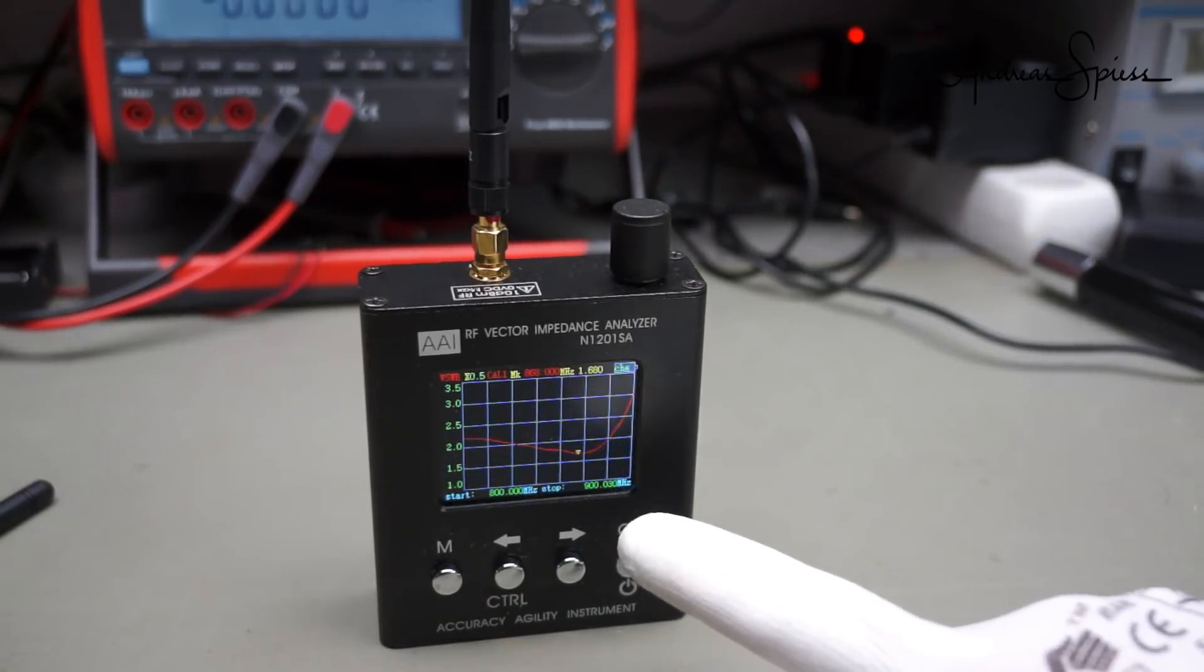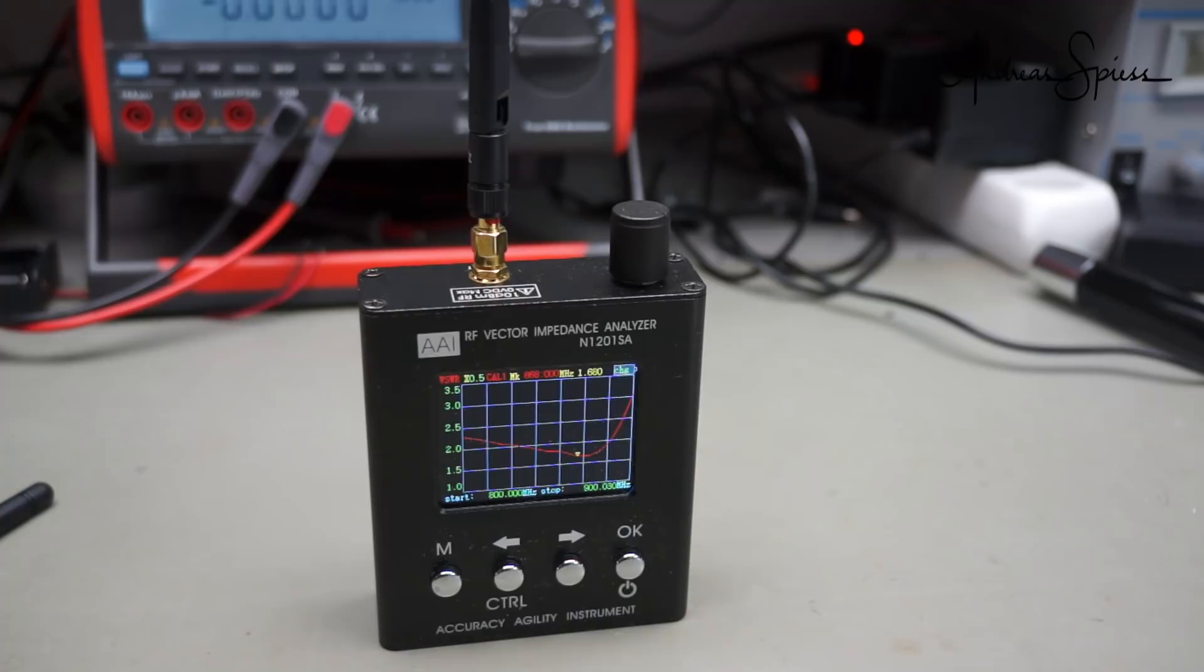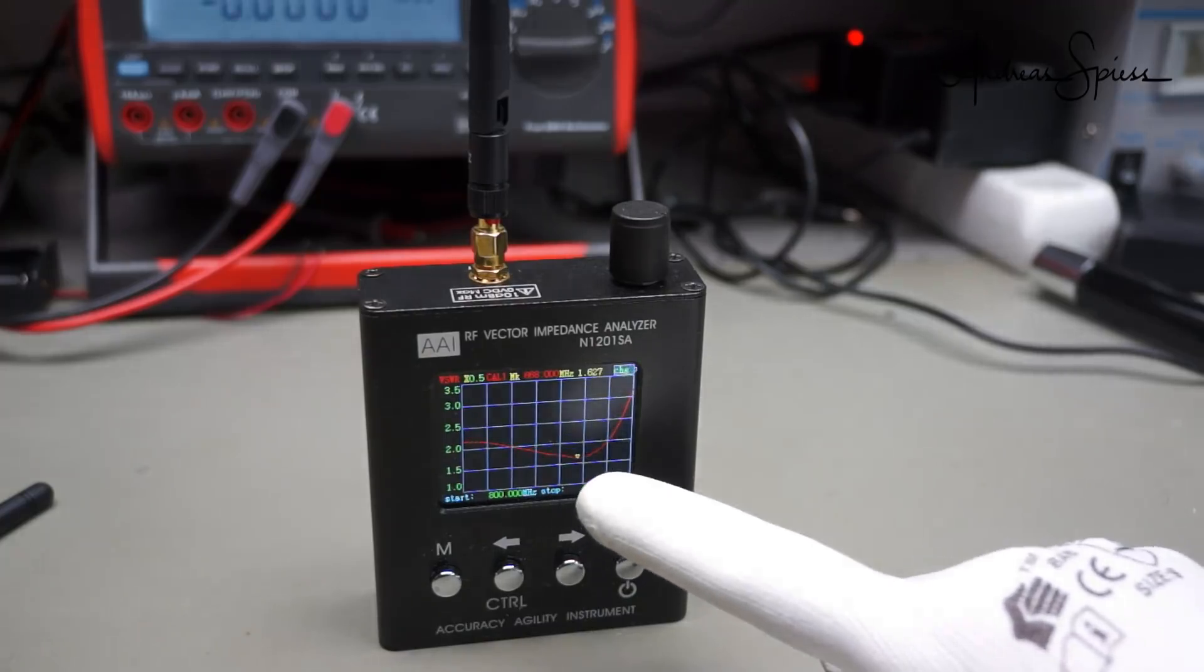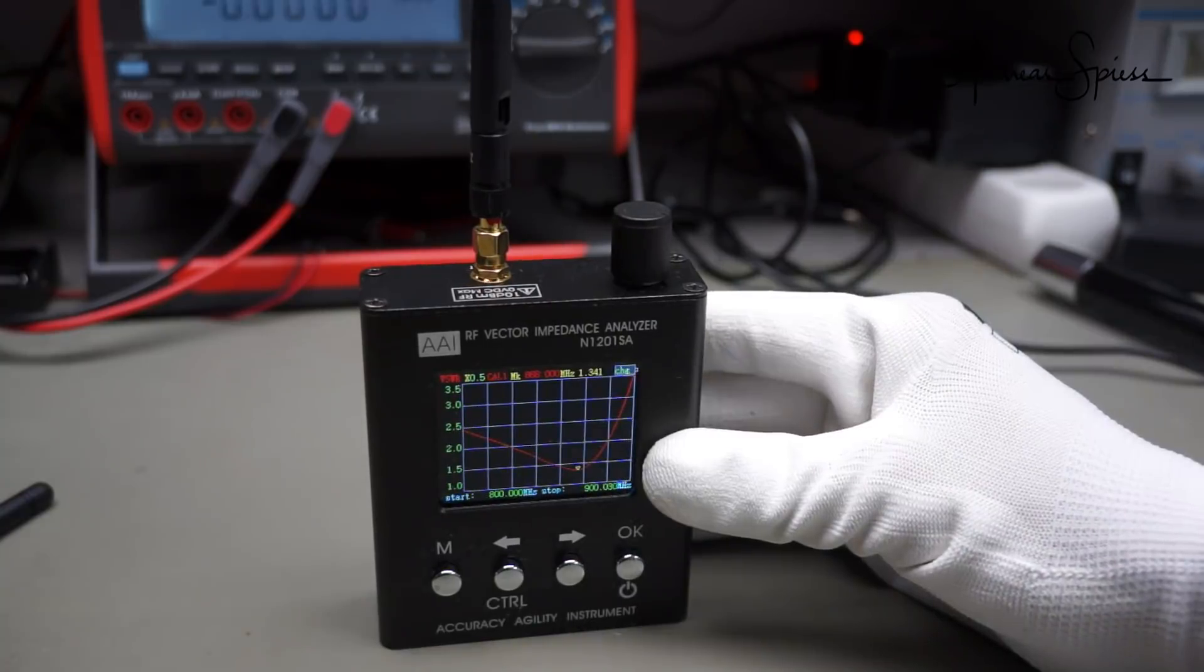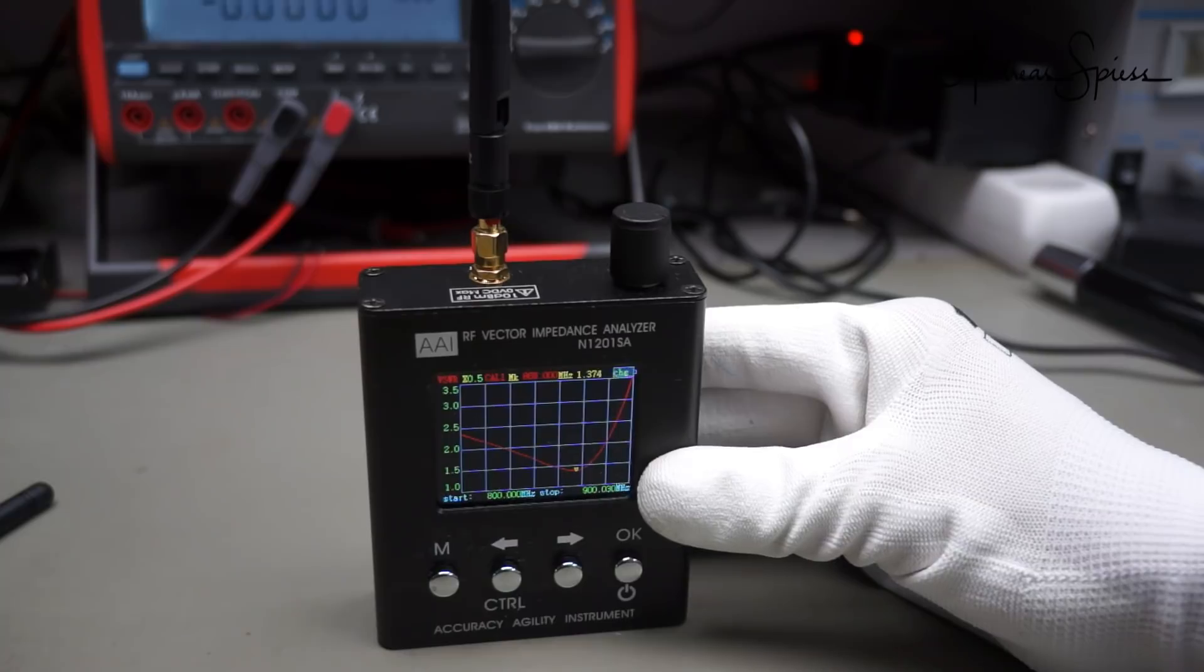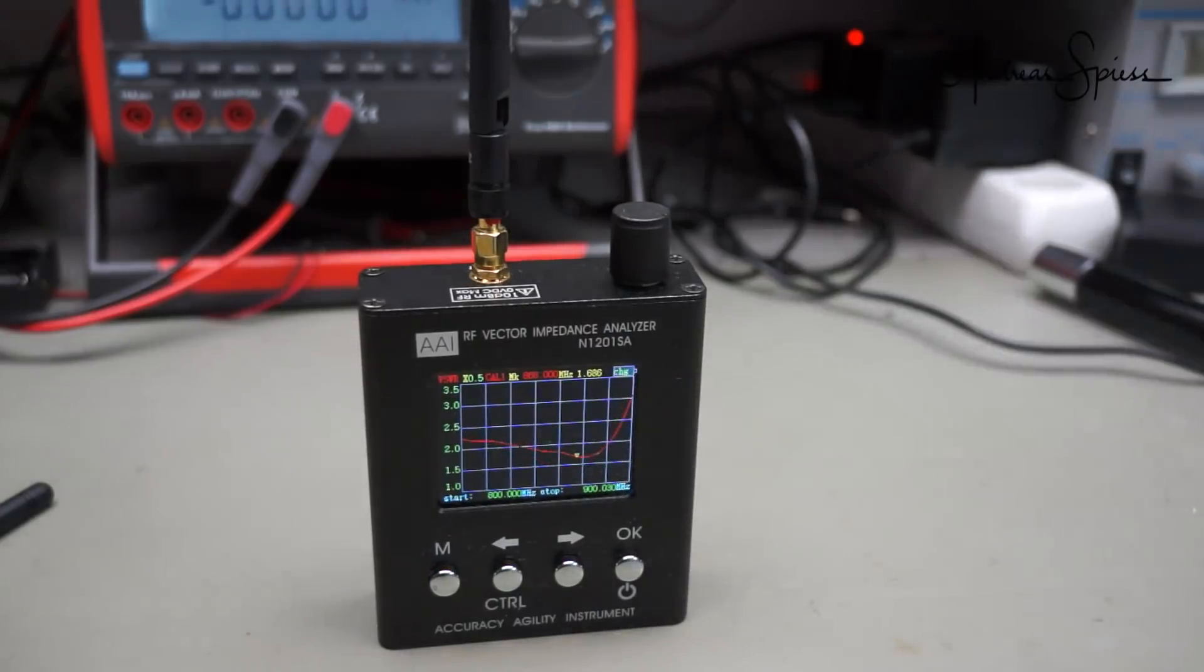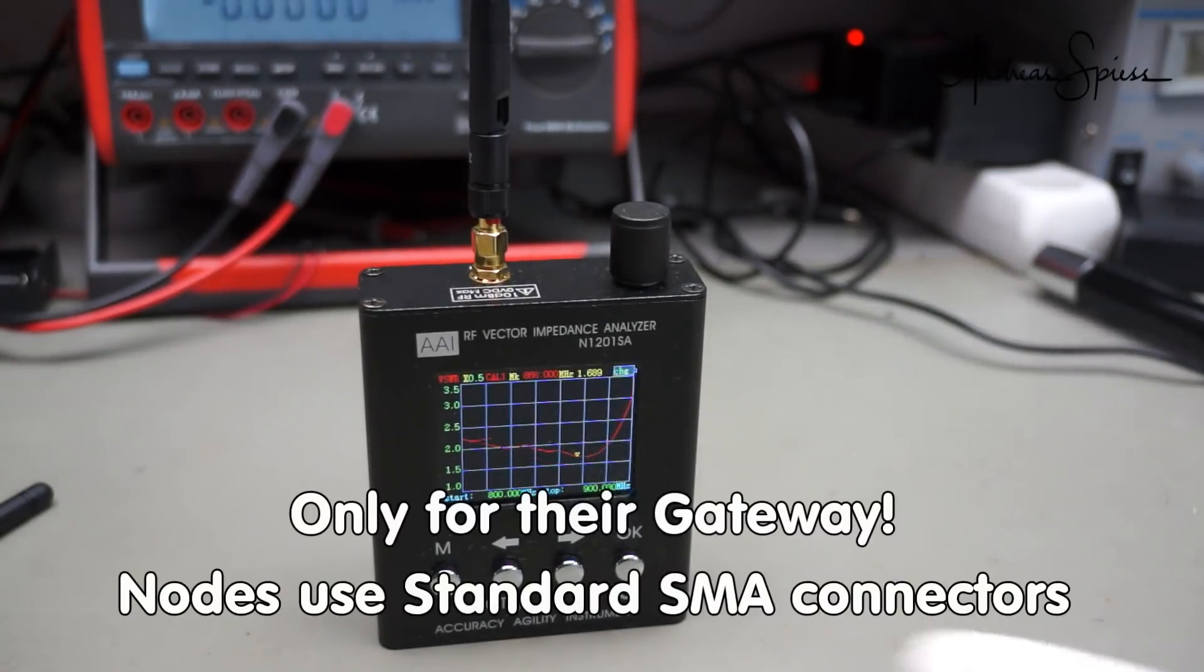The antenna is at 1.6 VWSR, which is okay, which is actually everything below two is good for our purposes. And the resonance is or the minimum is at 868 as expected or as wished. And if I just touch the ground a little bit, it comes down to 1 to 1.4. So you see the influence of just a hand, but still the minimum is okay. So these antennas are now okay.